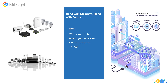From the most basic applications of checking our fitness levels, to the wide-reaching potential across industries and urban planning, the growing partnership between AI and IoT means that a smart future could occur sooner than we expect. So hand in hand with Milesight means hand in hand with the future, because Milesight not only provides IoT products, but also artificial intelligence IoT products.